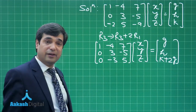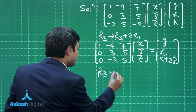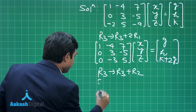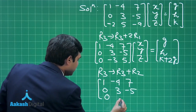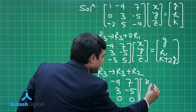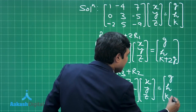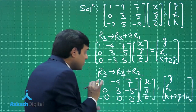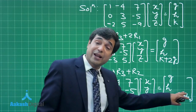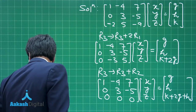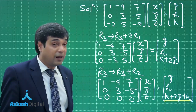Next, I replace R3 with R3 + R2. This gives the matrix [1, -4, 7; 0, 3, -5; 0, 0, 0] on the left, and the right-hand side becomes [g, h, k + 2g + h]. For the system to be consistent, the last row being all zeros requires that k + 2g + h must equal 0.